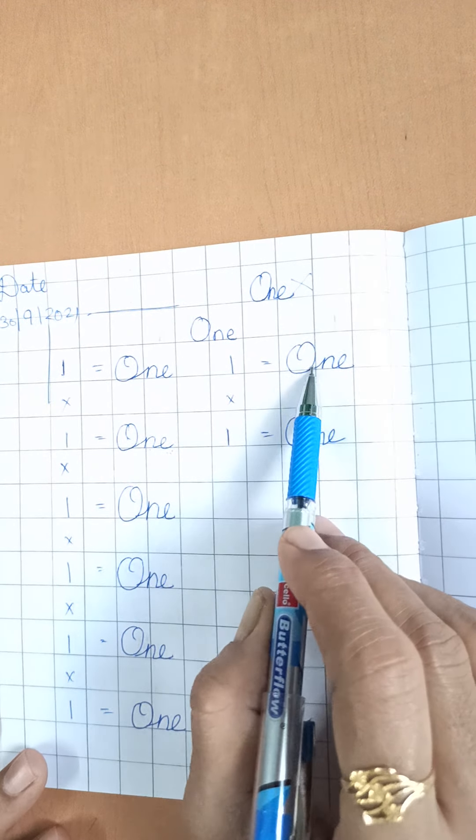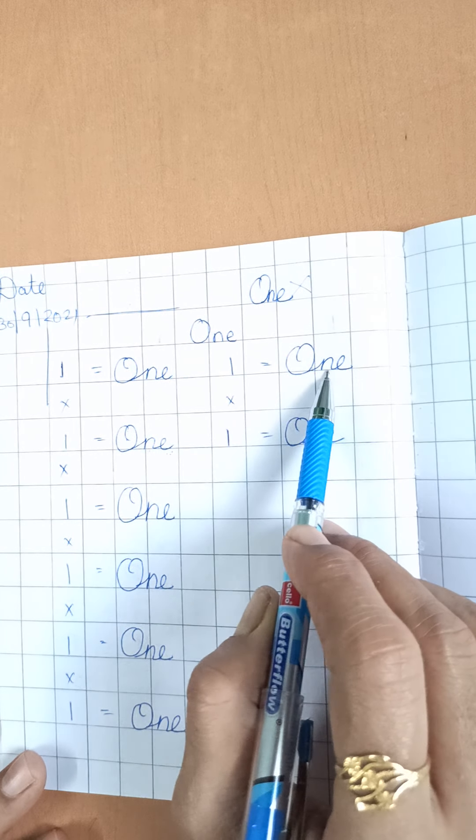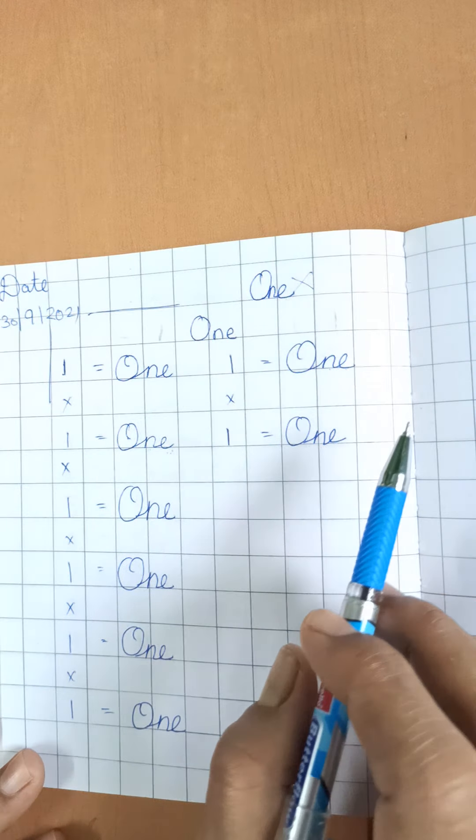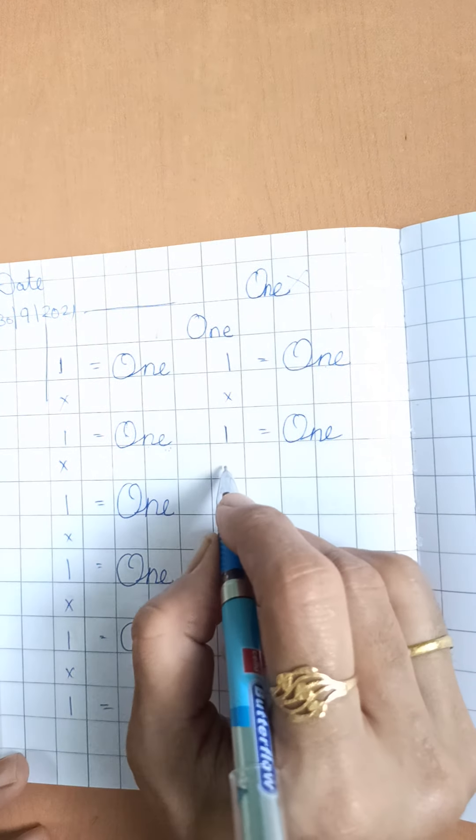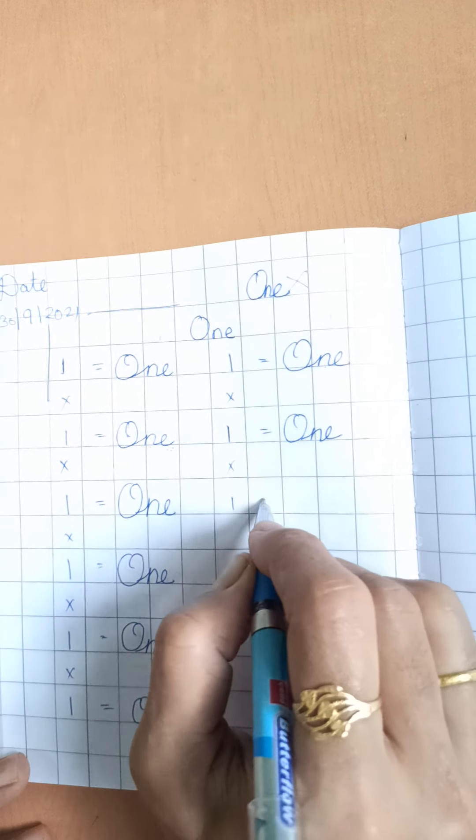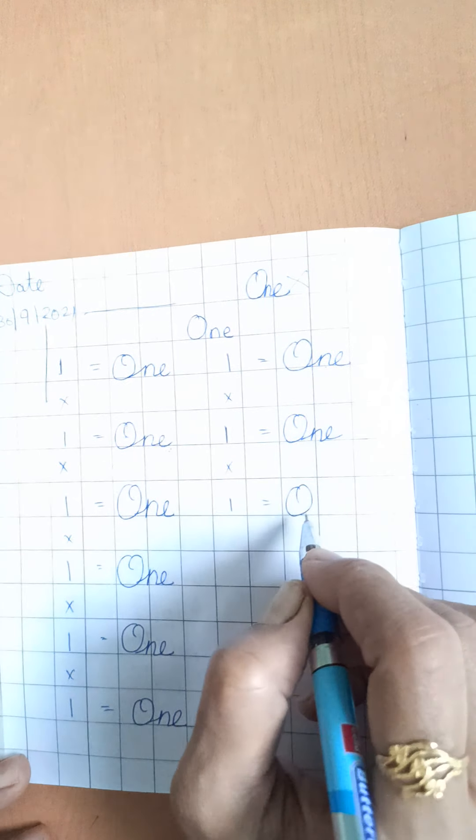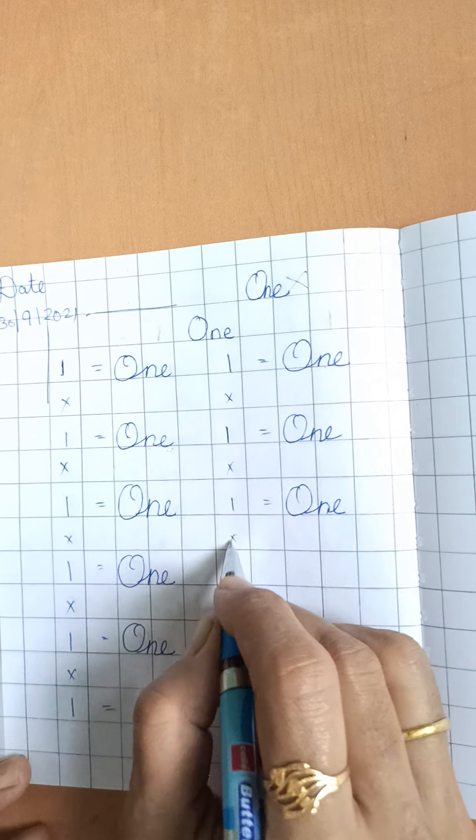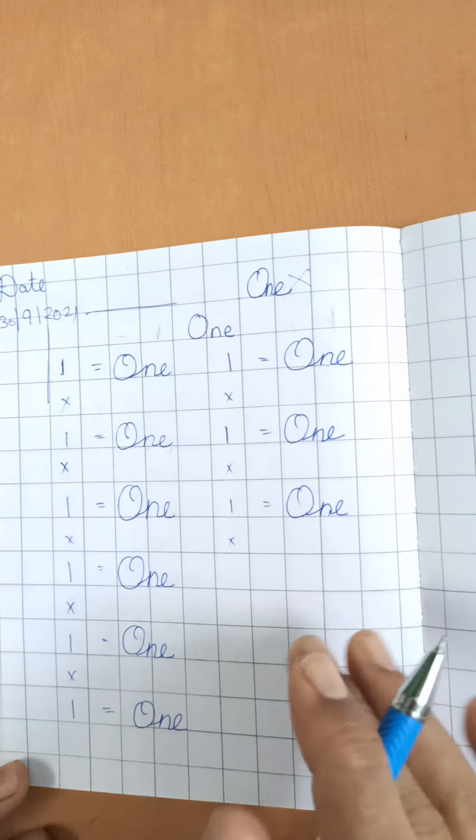Aapko O ke baad slanting line se standing line end karke E nikalna hai. Yeh sab dhyaan se dekhke aapko kya kya, kuch jo galtiya hai, woh aapko kam karna hai. Isliye aap video bohot baar dekh sakte ho.